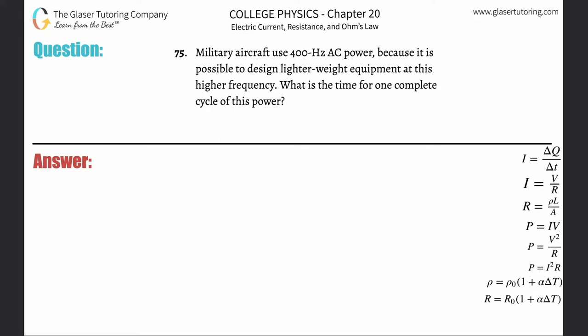Number 75: Military aircraft use 400 hertz alternating power because it is possible to design lighter weight equipment at this higher frequency. What is the time for one complete cycle of this power?